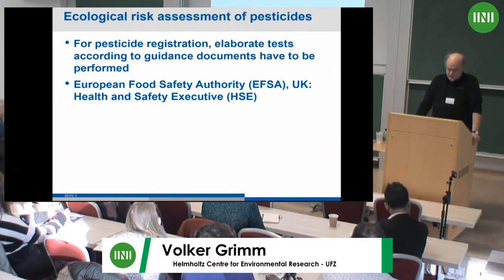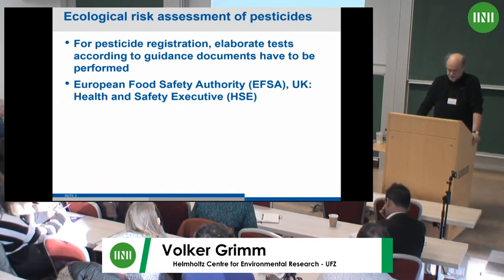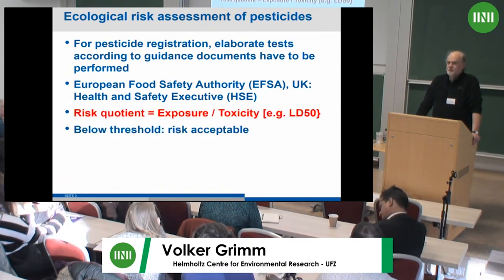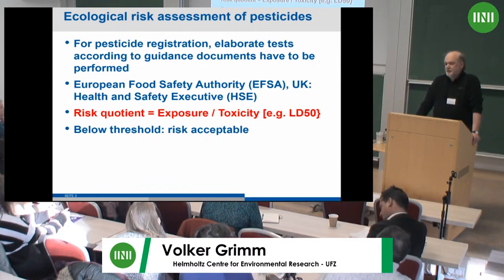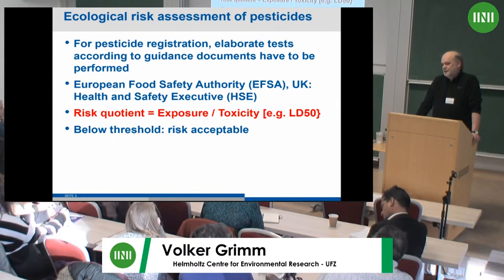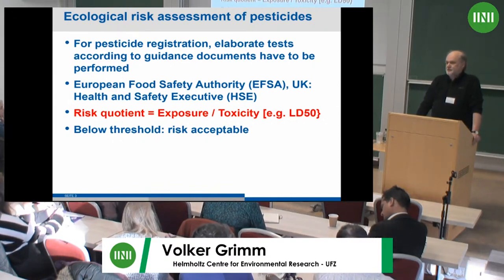In Europe, the EFSA is responsible for writing guidance. The overall rationale is that you have to show that your pesticide is below the so-called risk quotient. The pesticide is designed to kill certain animals in the field, but it should not overly put non-target species at risk — like earthworms, pollinators, birds, and so on.